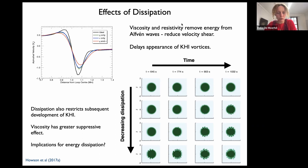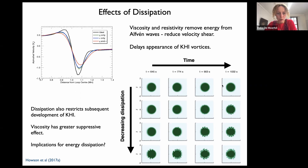This grid of simulation snapshots shows time increasing from left to right on a single row; the four rows represent four simulations in decreasing order of dissipation. At the bottom is the ideal simulation where KHI vortices build up over time. At the top, with the strongest dissipation, you get no formation of KHI at all. The question is: what is the implication for energy dissipation when you have stronger dissipation but a lack of fine-scale structure because the Kelvin-Helmholtz instability is no longer building up?